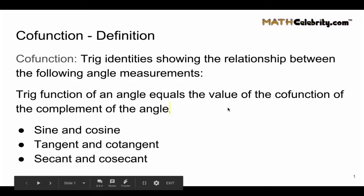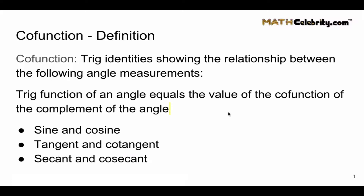First, let's talk about the definition of a co-function. Each of the trig identities show the relationship between the following angle measurements: the function of an angle equals the value of the co-function of the complement of the angle. The complement of the angle is 90 degrees, or pi over 2 for radians, minus the angle.